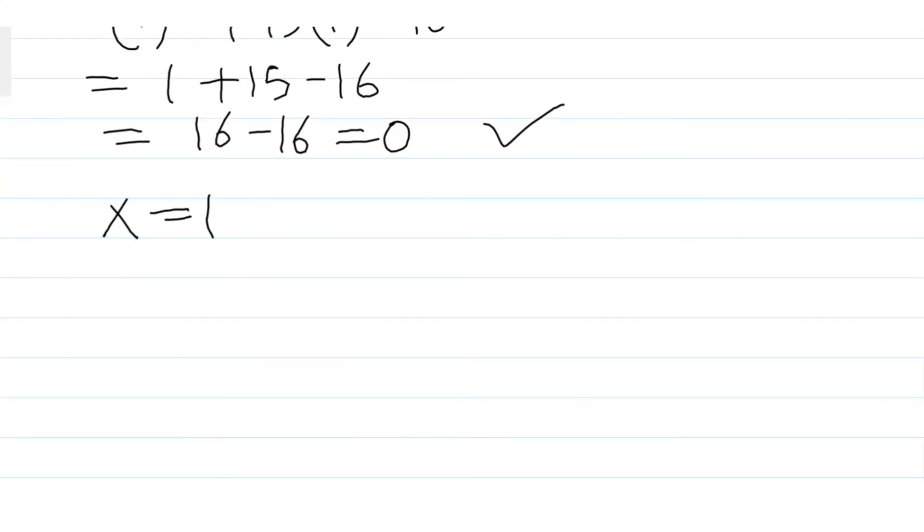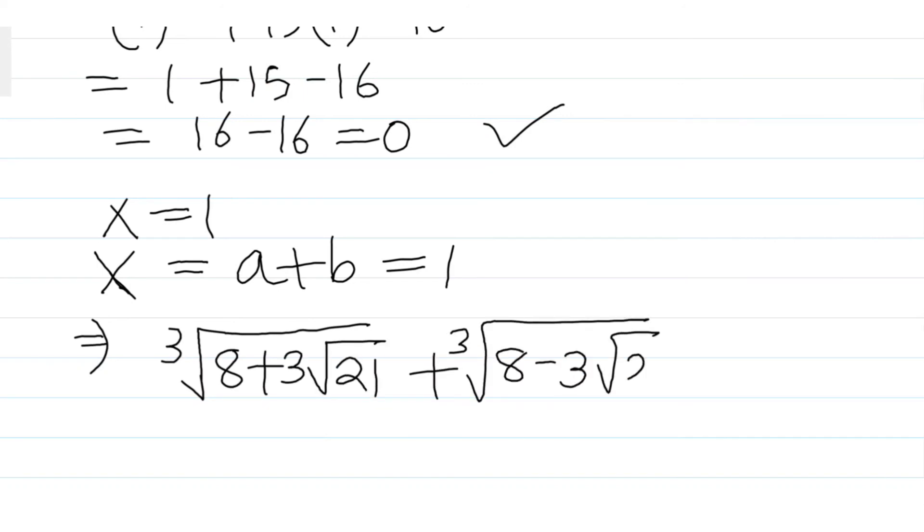And a plus b is nothing but our original equation, the cube root of 8 plus 3√21 plus the cube root of 8 minus 3√21, which equals 1. And that's our solution.